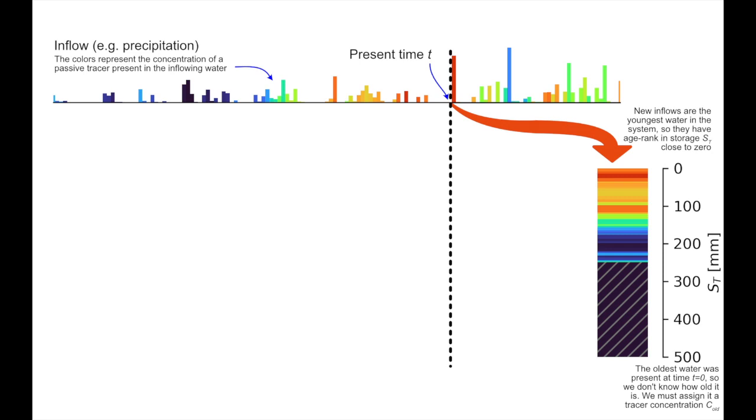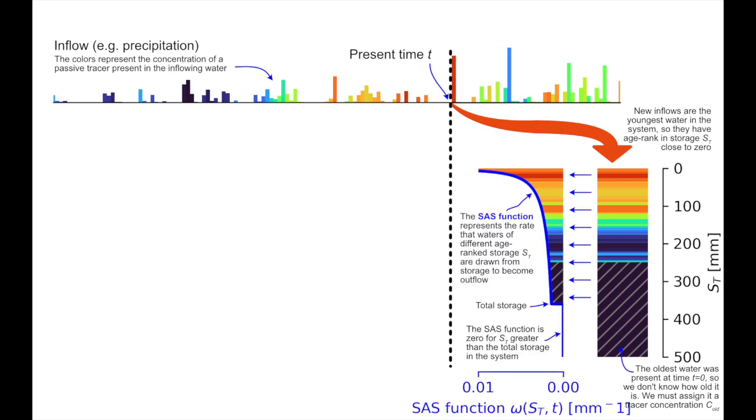At each time step, the outflow of water from the system is some mixture of water drawn from this column. The storage selection function characterizes the relative rate water is drawn from each point in the column, like this. In this case, the SAS function says more water is drawn from the top of the column than from further down. The SAS function is actually a probability density function over the age rank storage. And in this case, the PDF is biased towards younger storage.